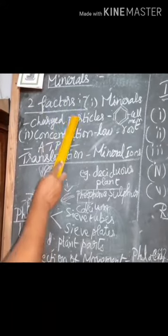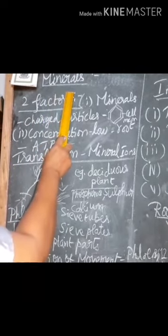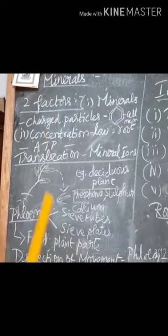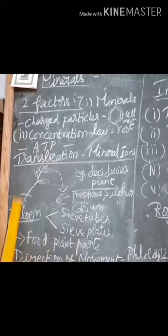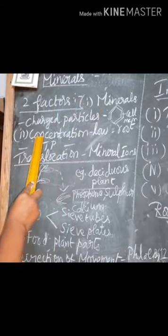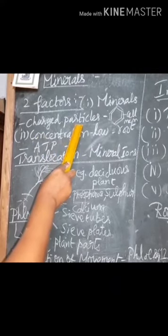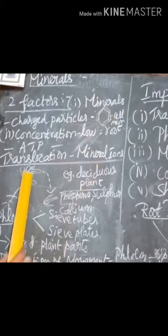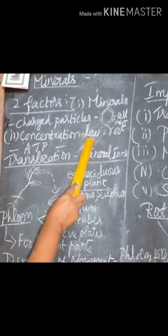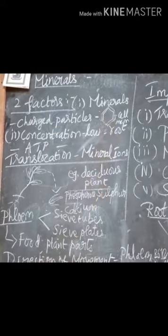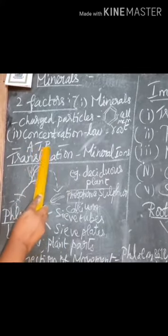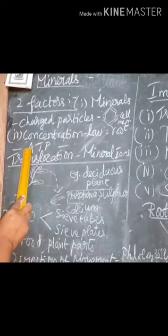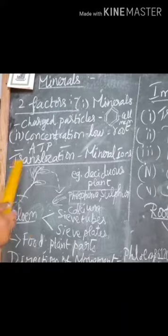Plants also need minerals from soil for nutritional requirements. However, all minerals cannot be absorbed by the roots for two reasons: minerals in the soil are charged particles, so they cannot move through the cell membrane; and second, the concentration of minerals at the root is very low. So they need energy in the form of ATP — adenosine triphosphate.